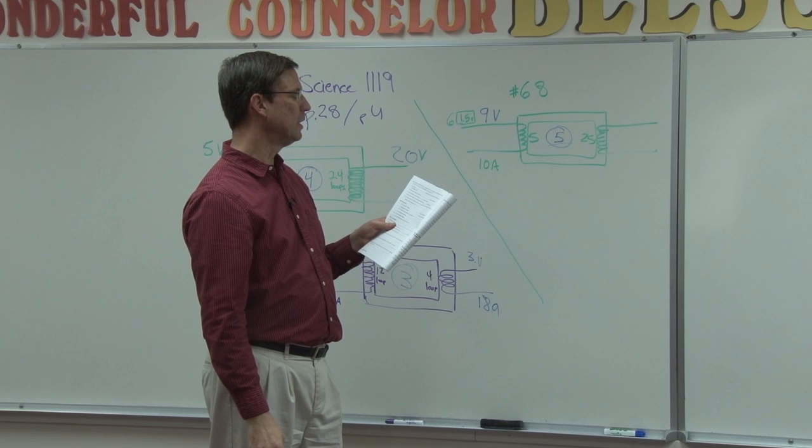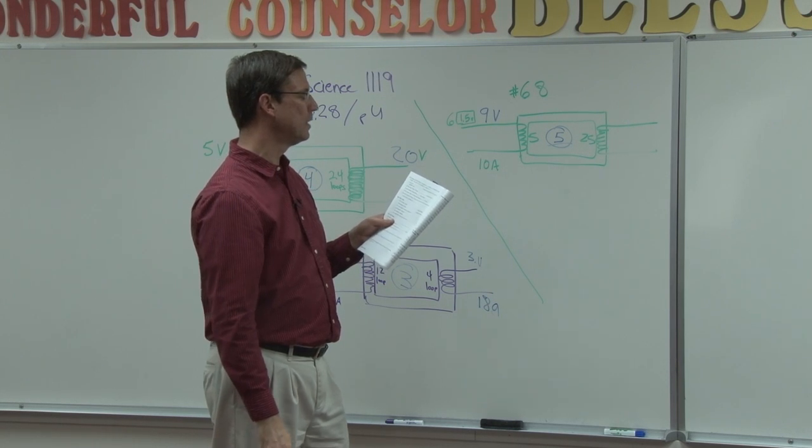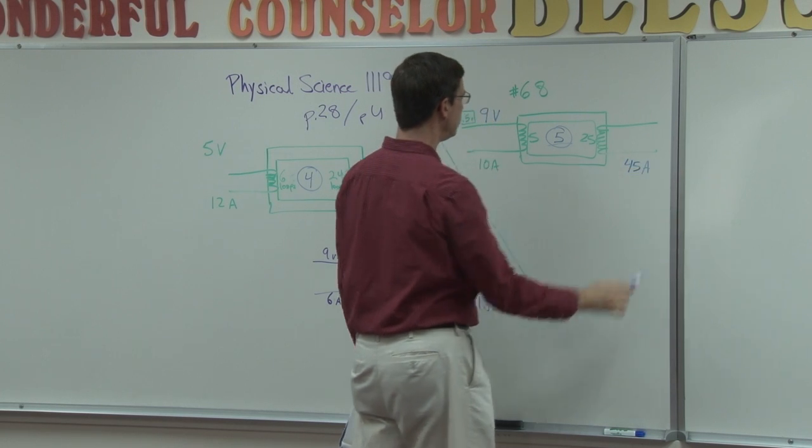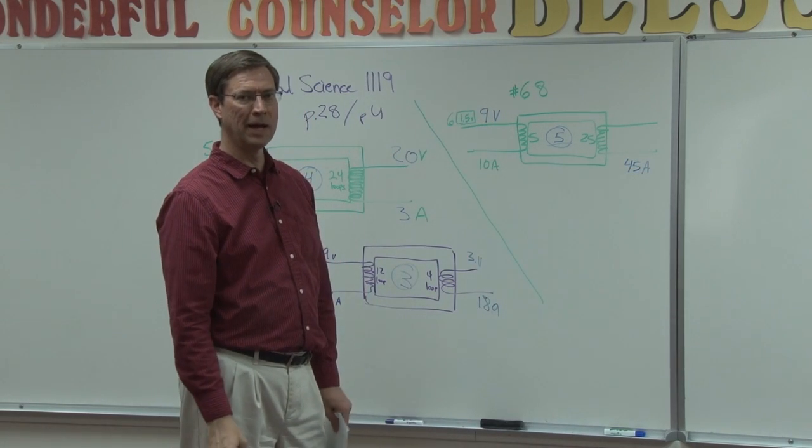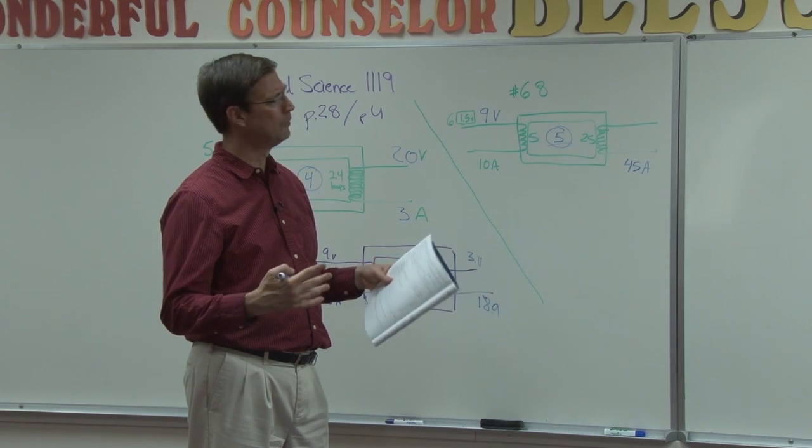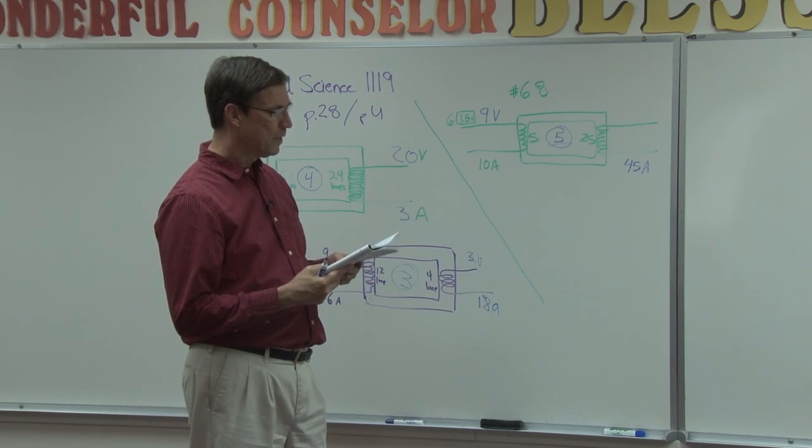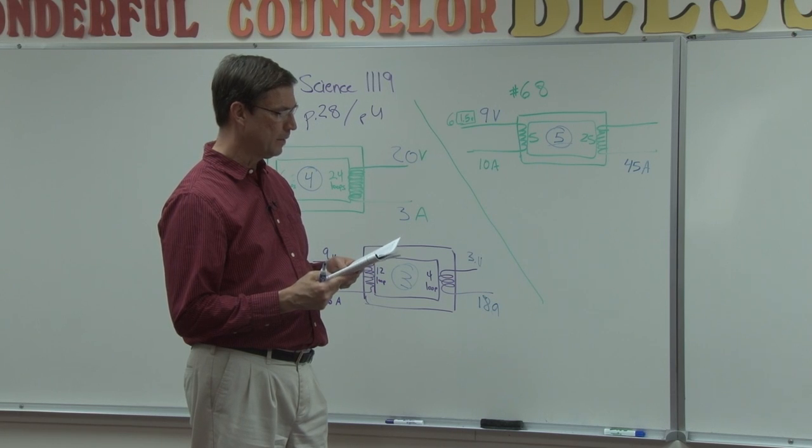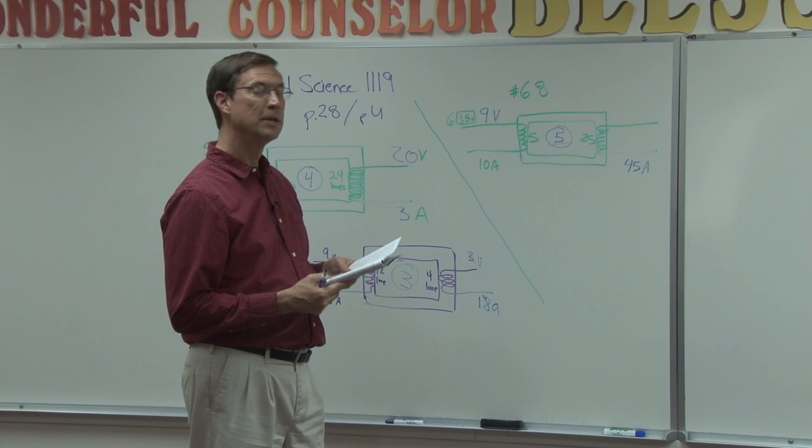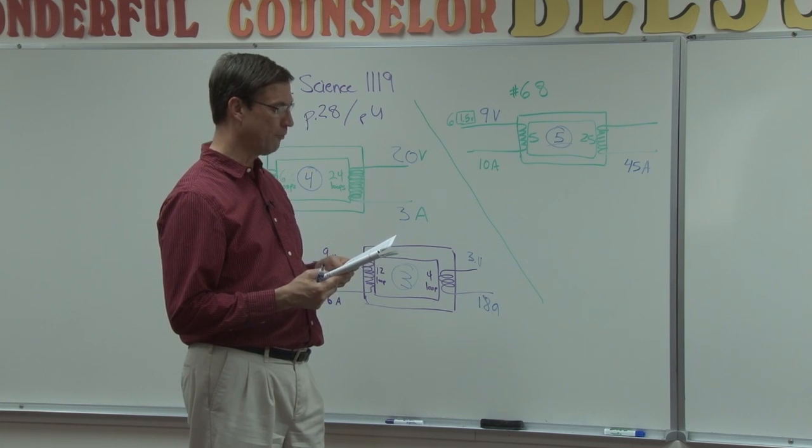Now what's confusing is they stick in there. It says the current in the secondary coil is 45. Now what's interesting is we never have to use that. It's like cement thrown in to make it hard. It really has nothing to do with the problem. Because you're going to answer question A, B, C, D without using that 45.